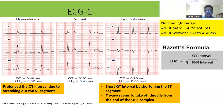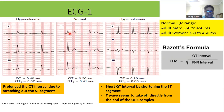As you can see in this hypercalcemia ECG, the corrected QT interval is 0.36 — shortened compared to normal. If you look closely, the T-wave seems to take off directly from the end of the QRS complex, whereas in a normal ECG there is a flat ST segment just after the QRS complex. In hypercalcemia, the T-waves start immediately after the QRS complex — this is a typical finding.